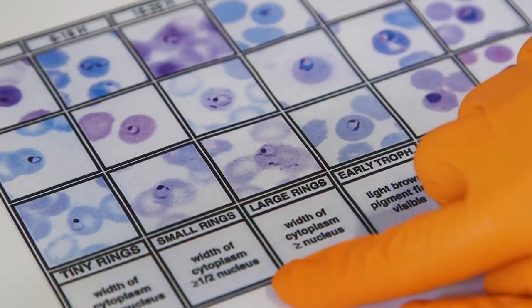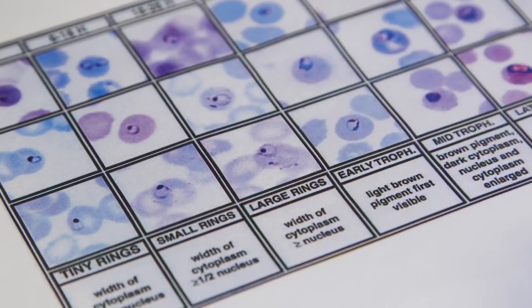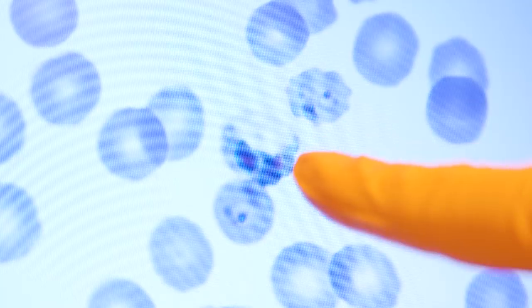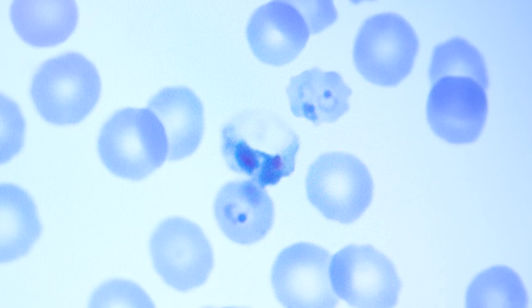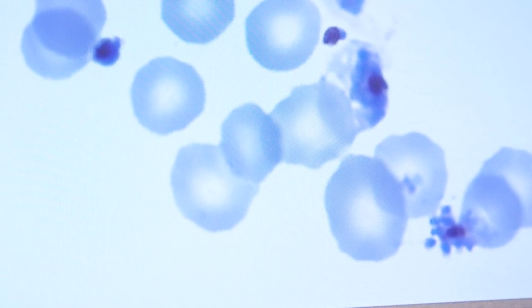The very small ones are rings that will then grow into bigger parasites called trophozoites, and these will start multiplying and forming a schizont.